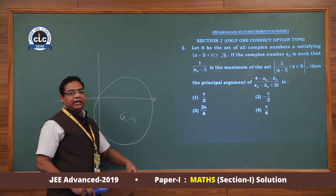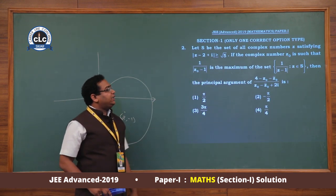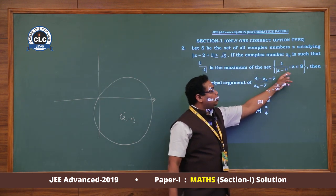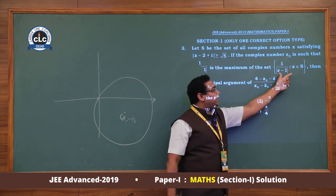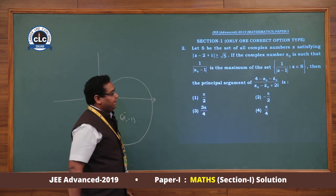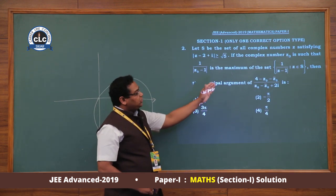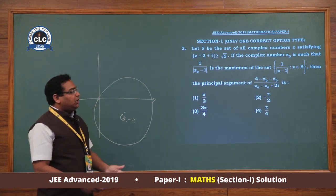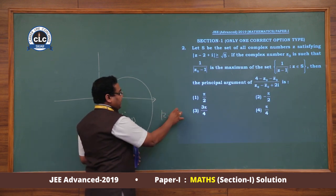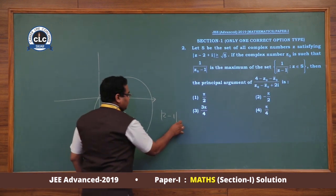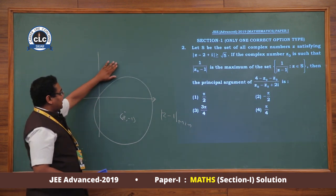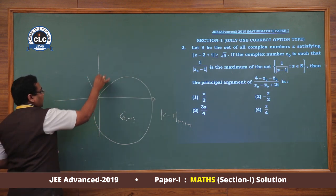1/|z − 1| will be maximum when |z − 1| is minimum. So we need the minimum of |z − 1|. We know z represents the region exterior to the circle. The point (1, 0) is somewhere here. |z − 1| will be minimum when we join the center and this point, extend it, and take that boundary point as z, so the distance between z and 1 is minimum.